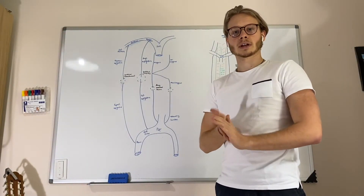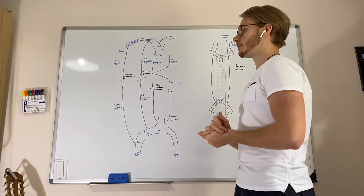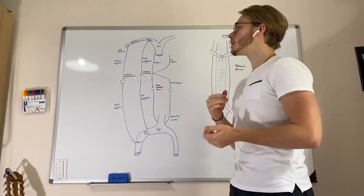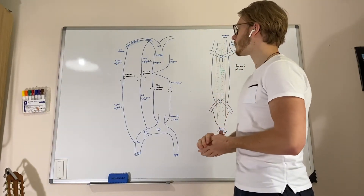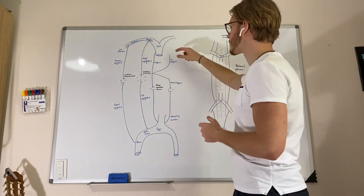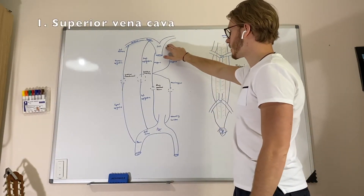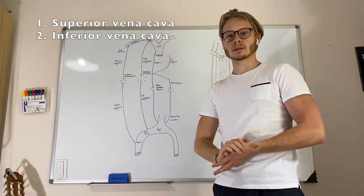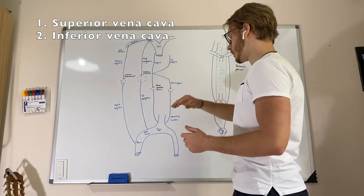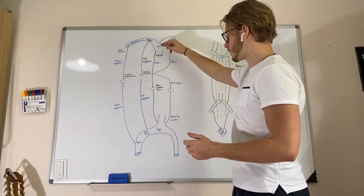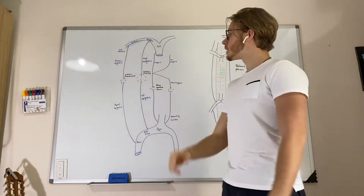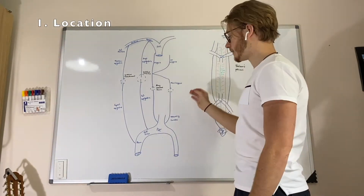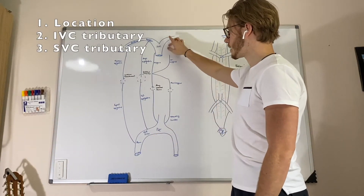Now it's time for the caval-caval anastomosis. Caval-caval anastomosis means there is a connection between the two caval systems. The first caval system is the superior vena cava and the other is the inferior vena cava. So caval-caval anastomoses are basically the connections between the IVC and the SVC. We have four of them — again, name the location and which vein comes from the IVC and which comes from the SVC.